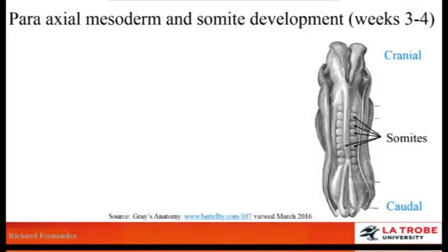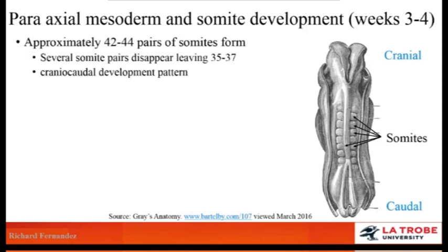When we consider how the para-axial mesoderm develops into somites, approximately 42 to 44 pairs of somites develop and run along the entire length of the developing embryo, just lateral to the notochord. However, a lot of these somites disappear, and we end up with around 35 to 37.